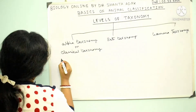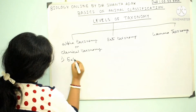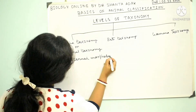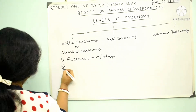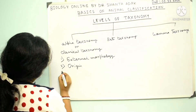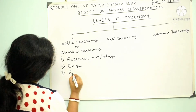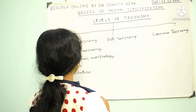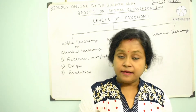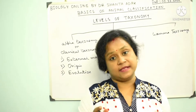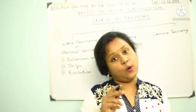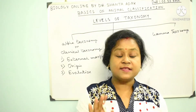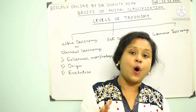Classical taxonomy, or alpha taxonomy, is based on external morphology, origin, and evolution. It is about finding, describing, and naming of organisms. This is the first and most basic step of taxonomy.